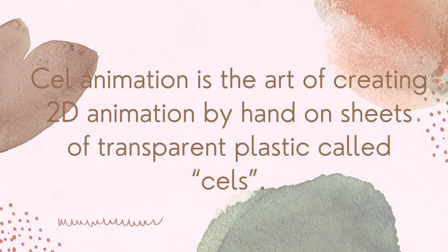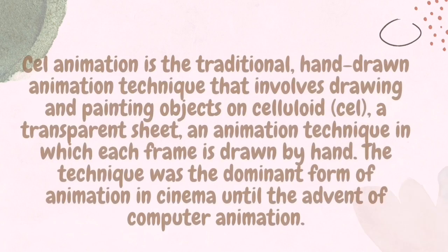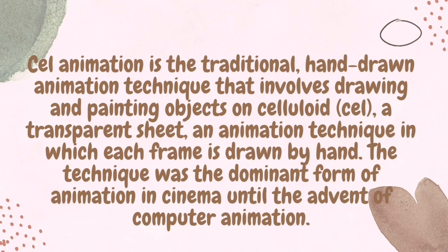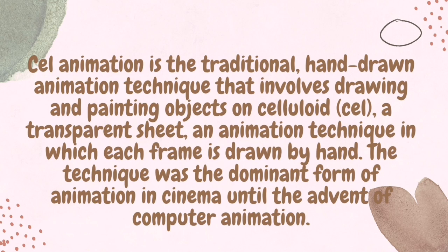Cel animation is the art of creating 2D animation by hand on sheets of transparent plastic called cels. It is the traditional hand-drawn animation technique that involves drawing and painting objects on celluloid or cel — an animation technique in which each frame is drawn by hand. This technique was the dominant form of animation in cinema until the advent of computer animation.